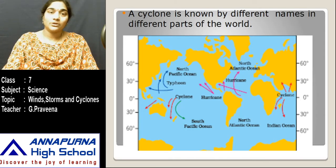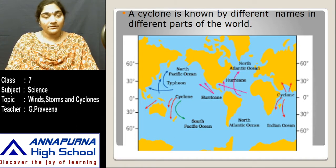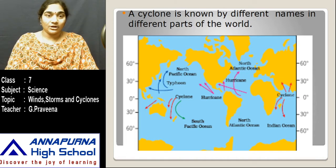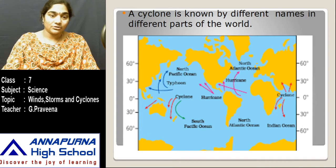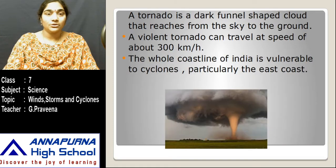Cyclones are called by different names in different parts of the world. In the American continents, this cyclone is called a hurricane. In the Philippines and Japan, it is called a typhoon. So, cyclones may be called cyclones, typhoons, or hurricanes depending on the region.